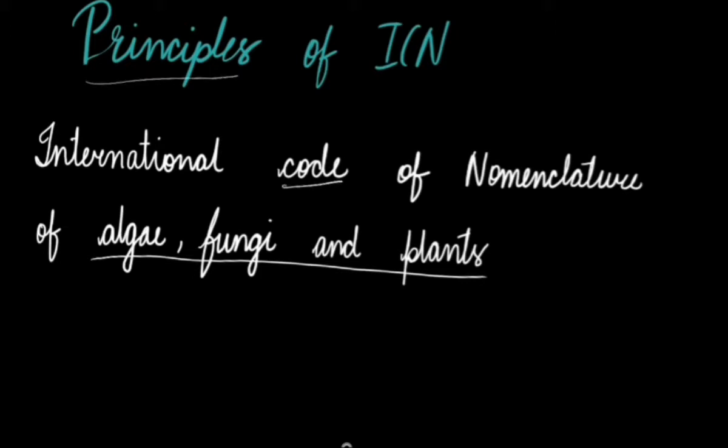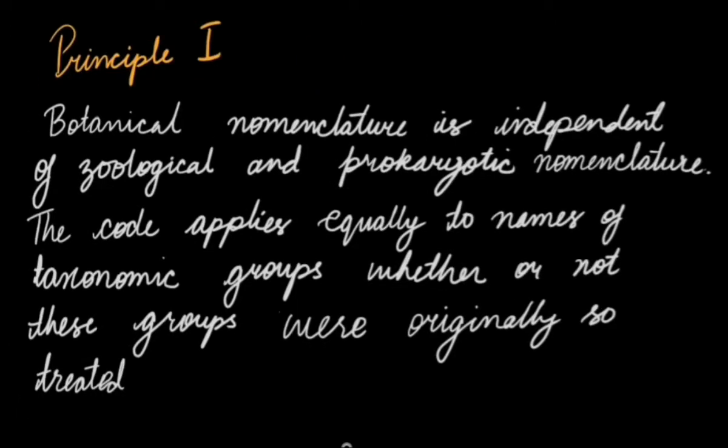These six principles are the fundamental basis for nomenclature. The first principle of ICN, Principle I, states that botanical nomenclature is independent of zoological and prokaryotic nomenclature. The code applies equally to names of taxonomic groups whether or not these groups were originally so treated.